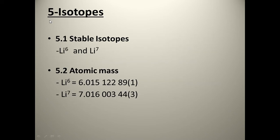The isotopes of lithium: it has two stable isotopes, which are Li-6 and Li-7. The atomic mass of these isotopes — the first one, Li-6, is equal to 6.015, and the second one, Li-7, is equal to 7.016.